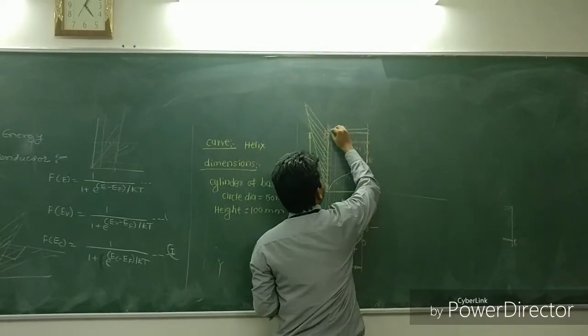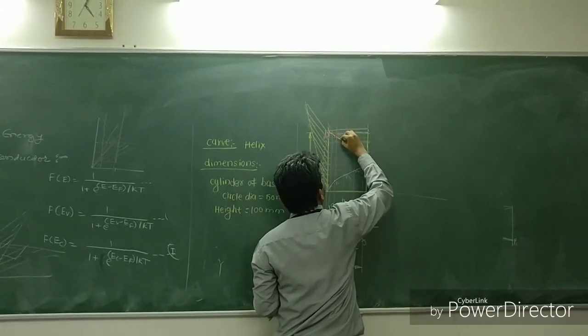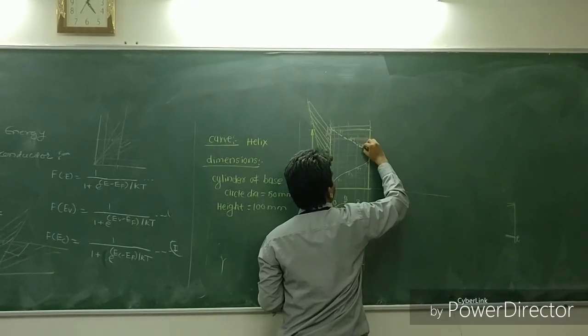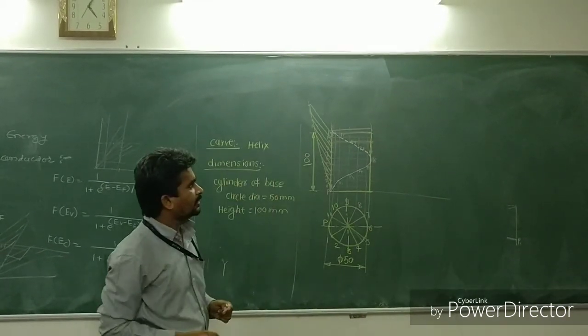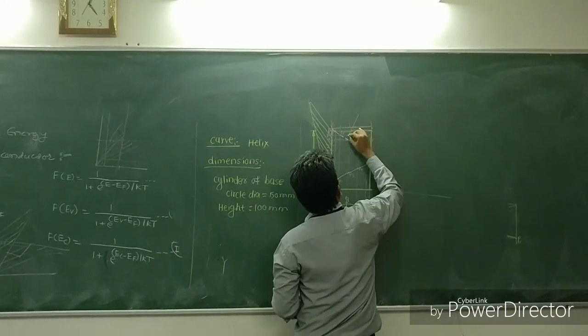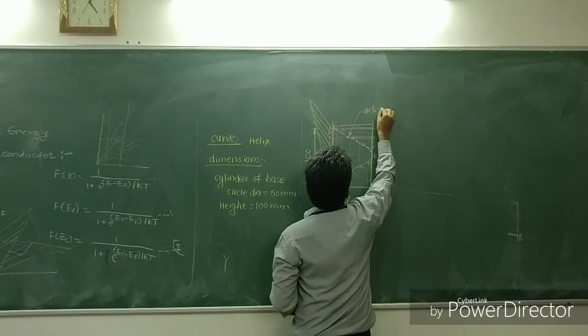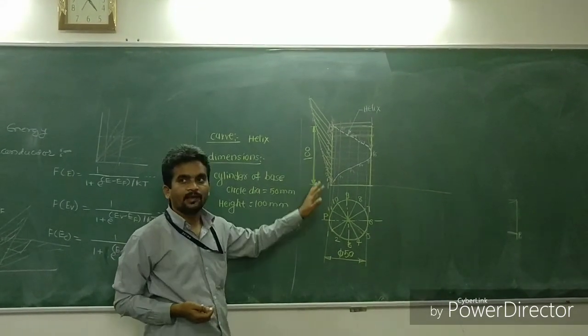And after this, the curve is starting here. These lines are dashed line. And you are getting this curve. And this curve is called Helix. This is helix. So in this way we have completed our helix, simple helix.